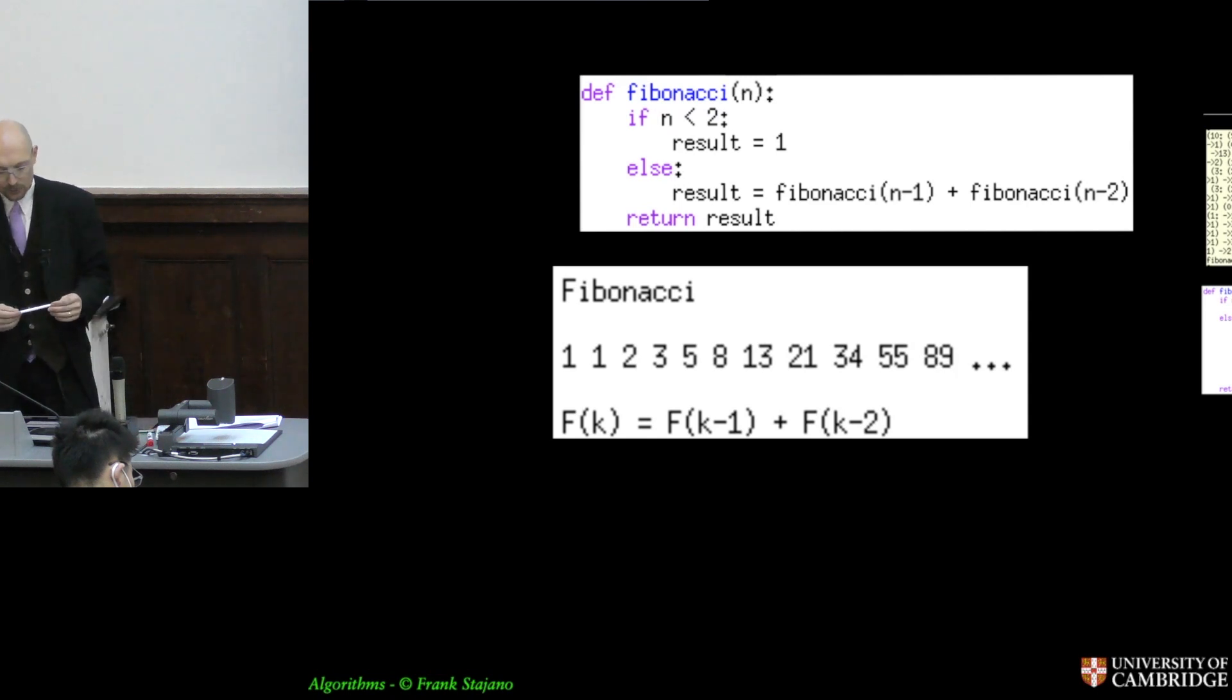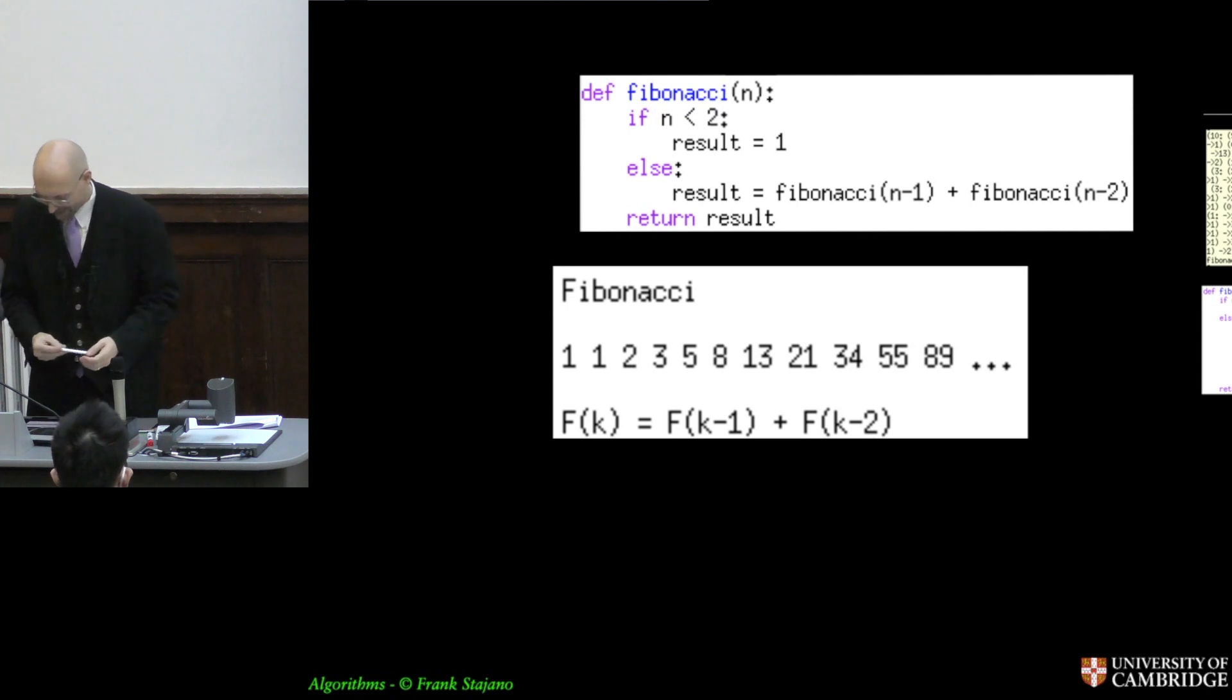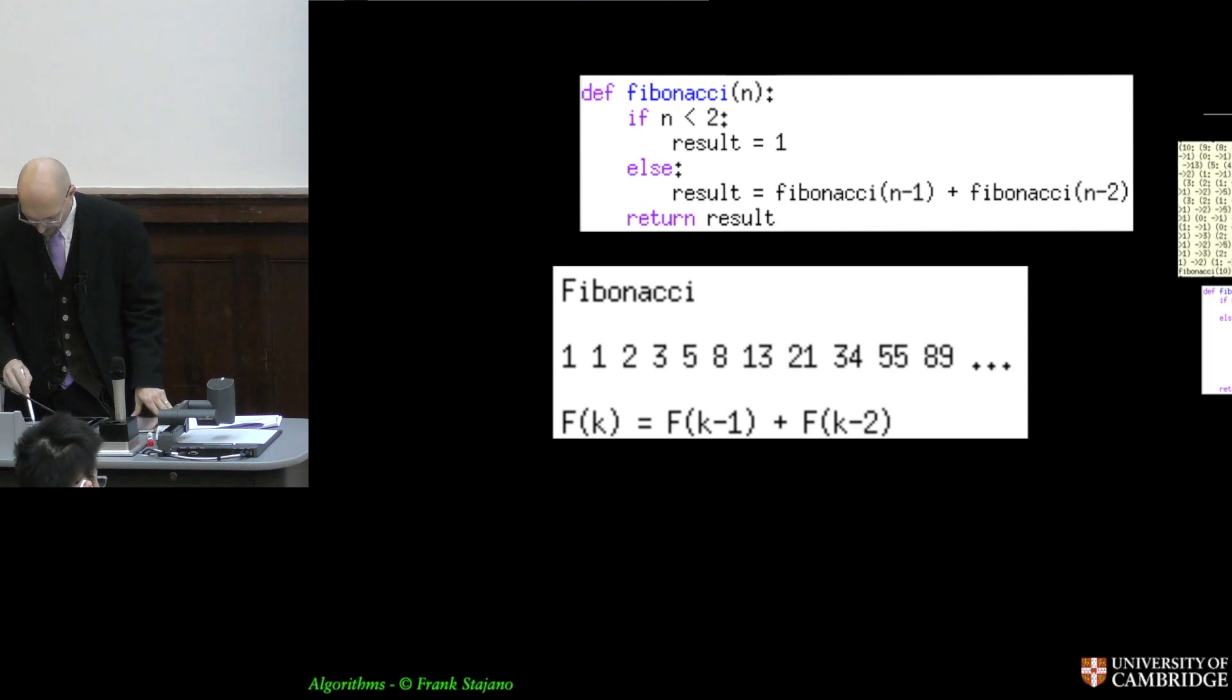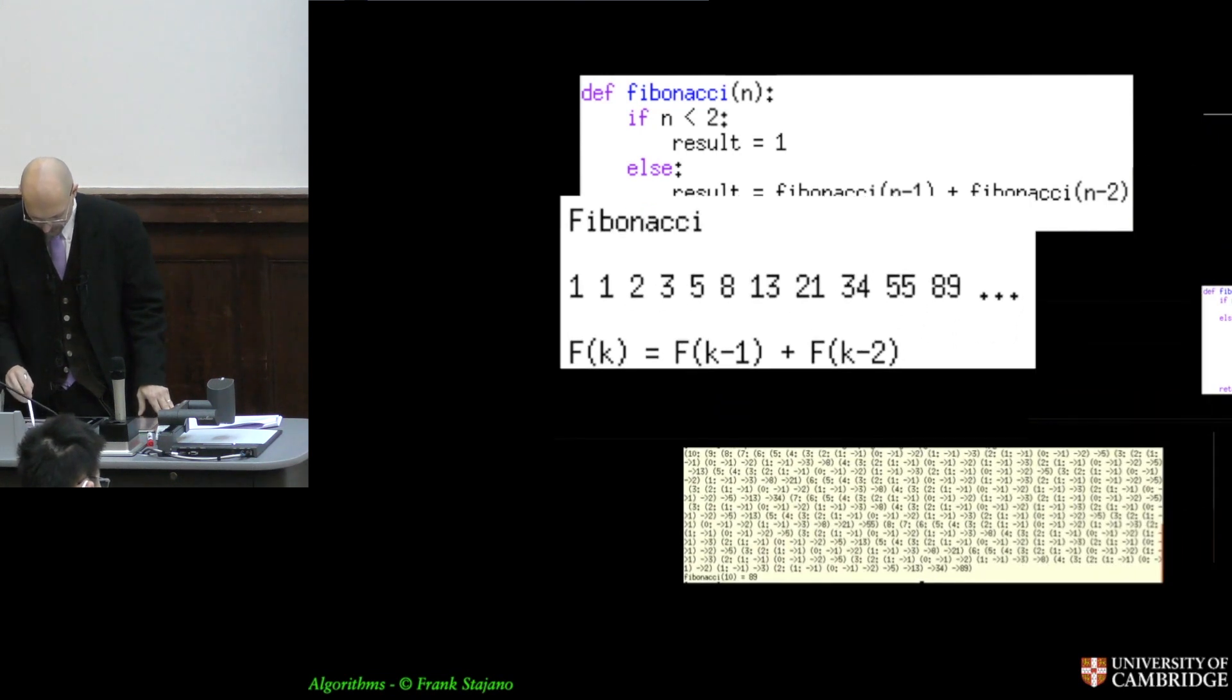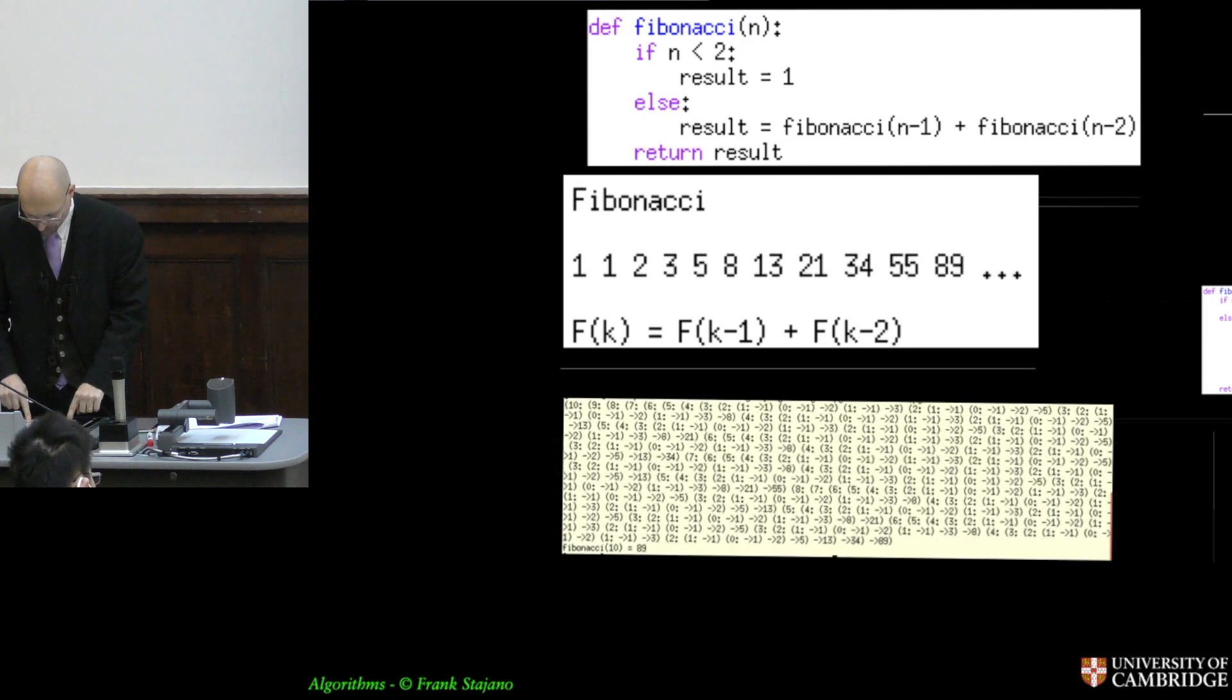So if you write this type of program, a very simple recursive program to compute Fibonacci sequences, and you run it on something like, for example, 30, you will think that your computer got stuck. Because you say Fibonacci 30, and nothing works. Why is that? It would take a very long time to even compute something as basic as 30. You could do quicker on a piece of paper by yourself than asking your computer to compute it with that program.